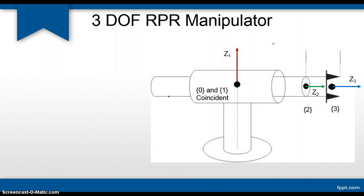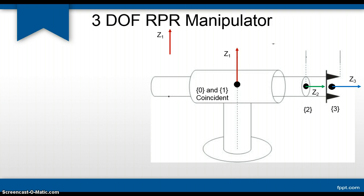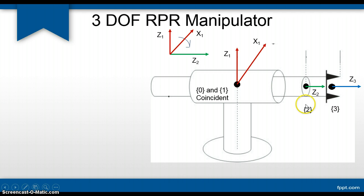Now our task is to assign the X axis. Unlike our previous example where all Z axes are parallel, here that is not the case. Z1 is vertical and Z2 is horizontal. So we need to use the right-hand rule. As per the definition of link twist — defined as the angle alpha from axis i-1 to axis i using the right-hand rule — we can assign axis X1 perpendicular to both Z axes, pointing into the plane of the screen.